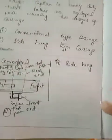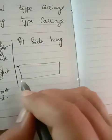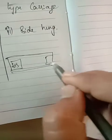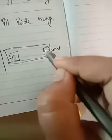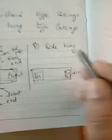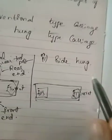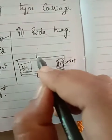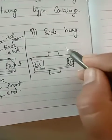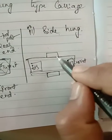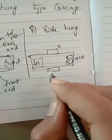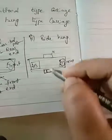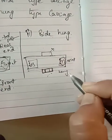Now move to side-hung type carriage. The side-hung type uses the same top view of the bed. Here the headstock is on the left-hand side and the hexagonal turret is on the right. The side-hung type is similar to engine lathe in the front-end and rear-end arrangement. The rear-end tool post is used at the back.